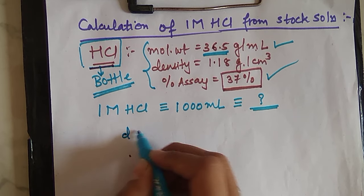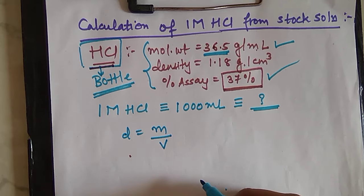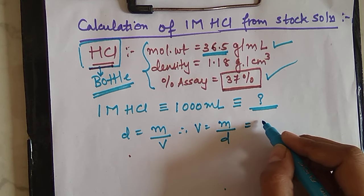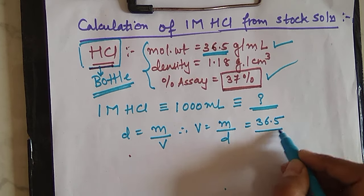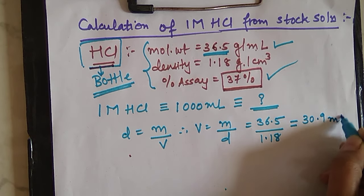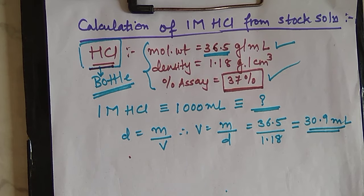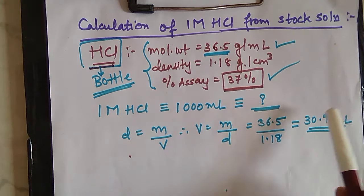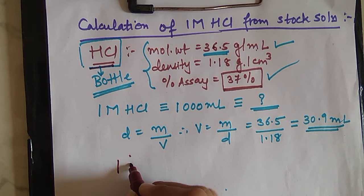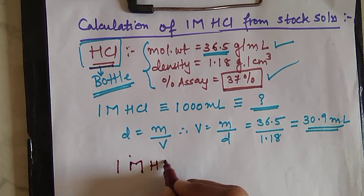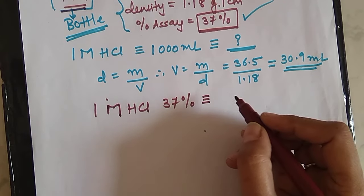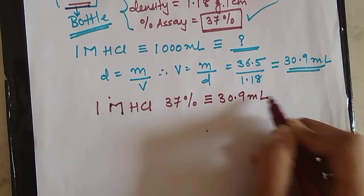We know the equation: density = mass / volume. So volume = mass / density. Mass of HCl, that is molar mass, is 36.5 and density is 1.18, so this gives you 30.9 ml. This means that 30.9 ml in terms of grams is 36.5. So we convert this into volume — it is around 30.9 ml. This means that in the given bottle, for 37% composition, it consists of 30.9 ml of HCl.